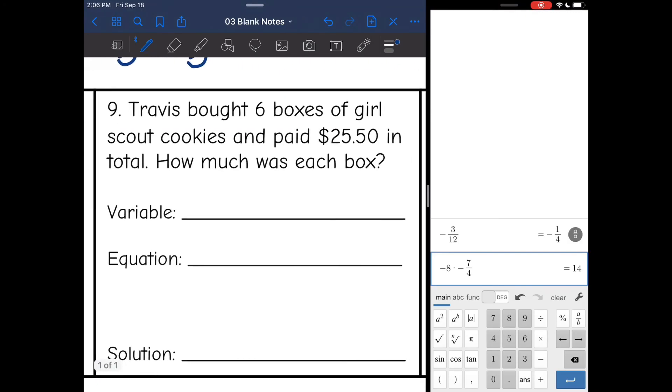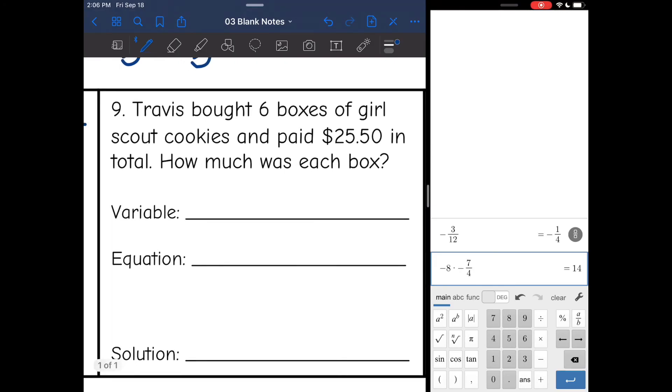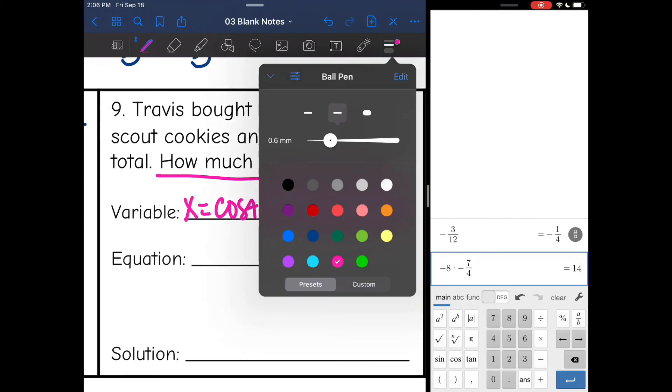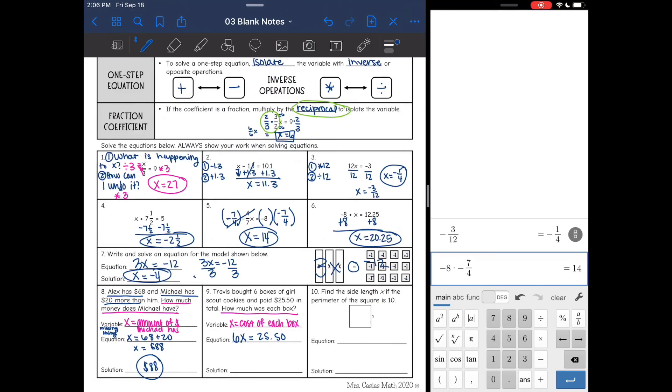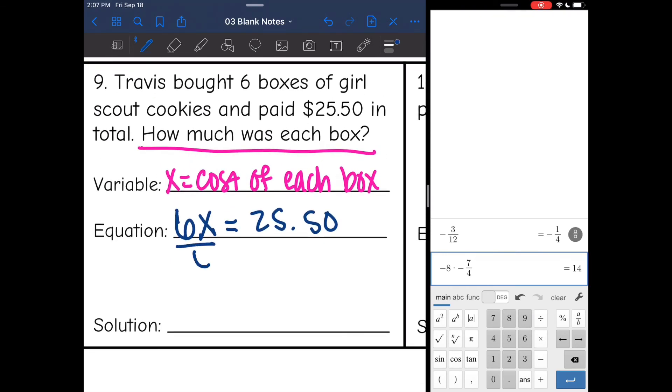Let's look at number 9. It says Travis bought 6 boxes of Girl Scout cookies and paid $25.50 in total. How much was each box? So there's the variable, how much was each box? That's what I'm looking for. So I will let x be the cost of each box. Travis bought 6 boxes, so it's going to be 6x because x is the box and he bought 6 of them. And he paid $25.50. Now all I have to do is divide by 6. $25.50 divided by 6 is $4.25. So each box costs $4.25.